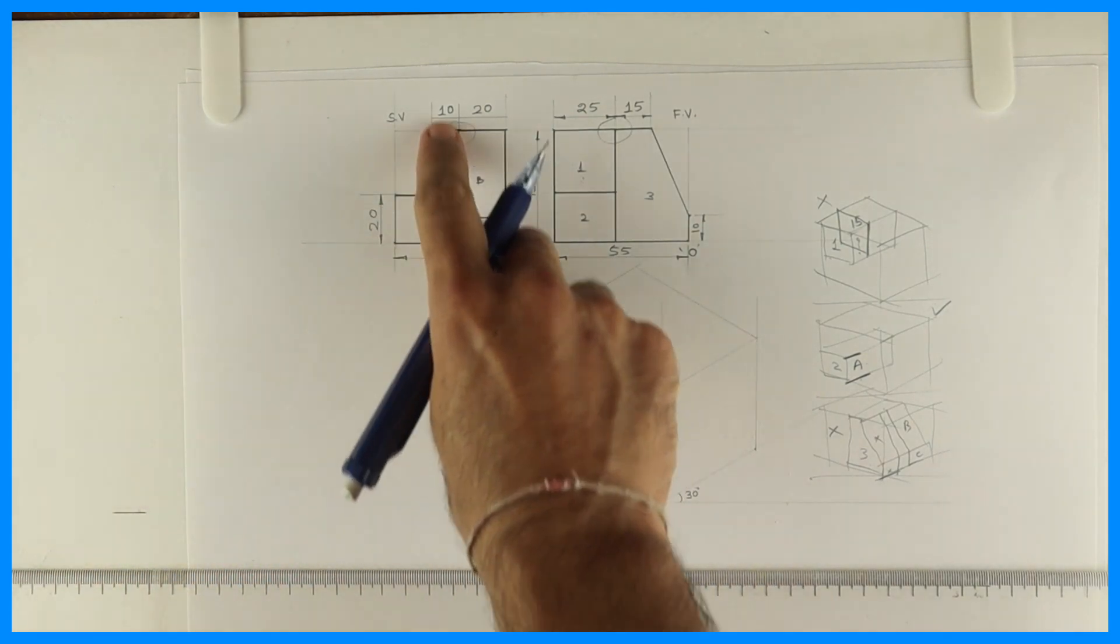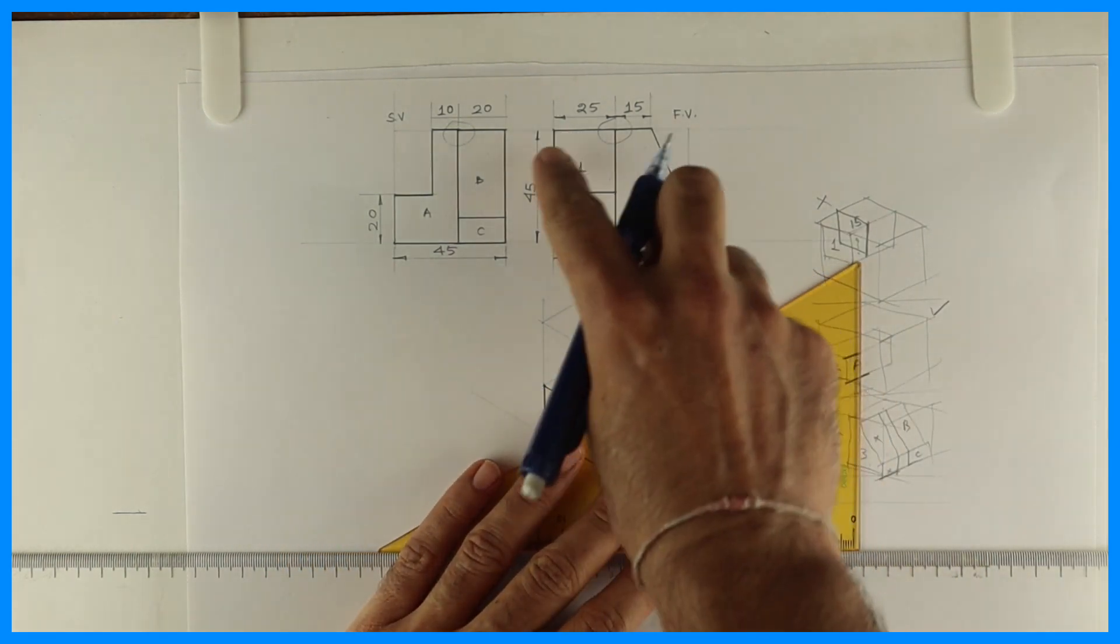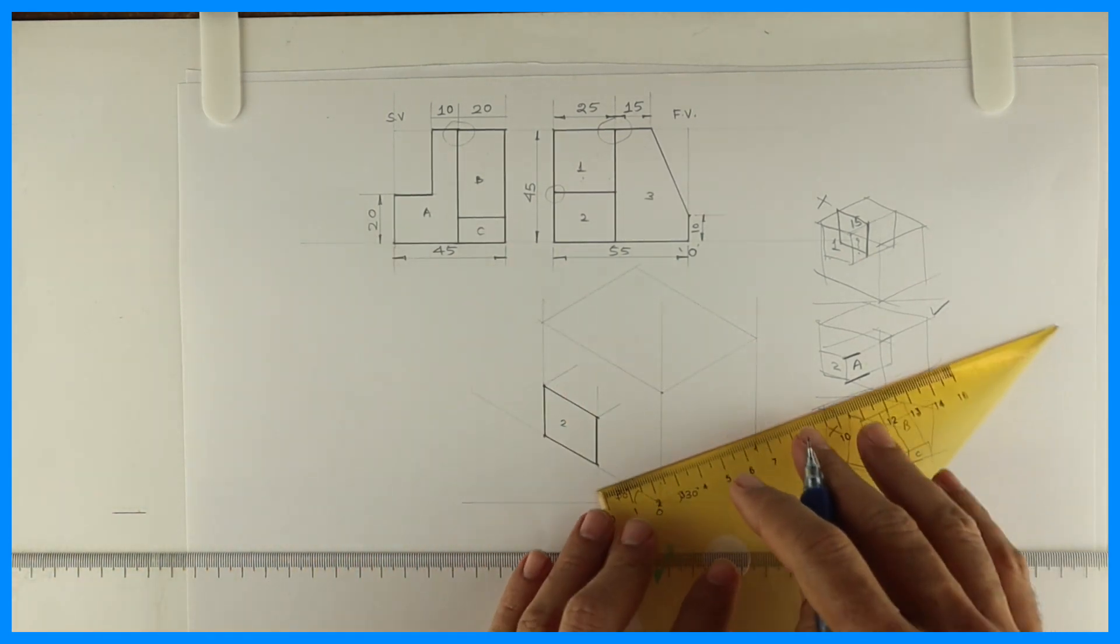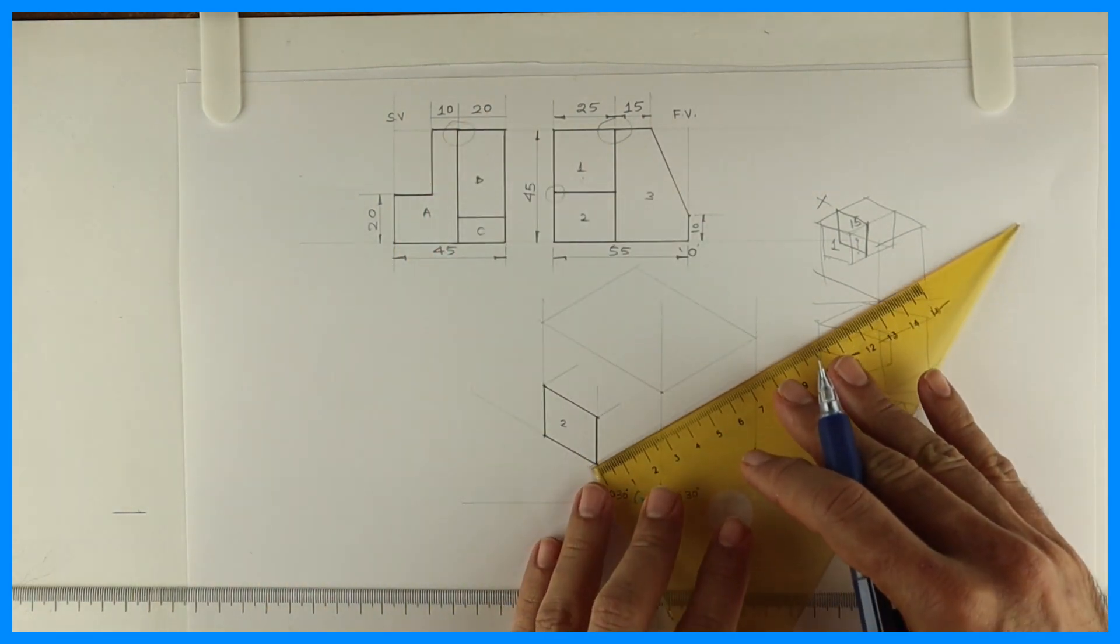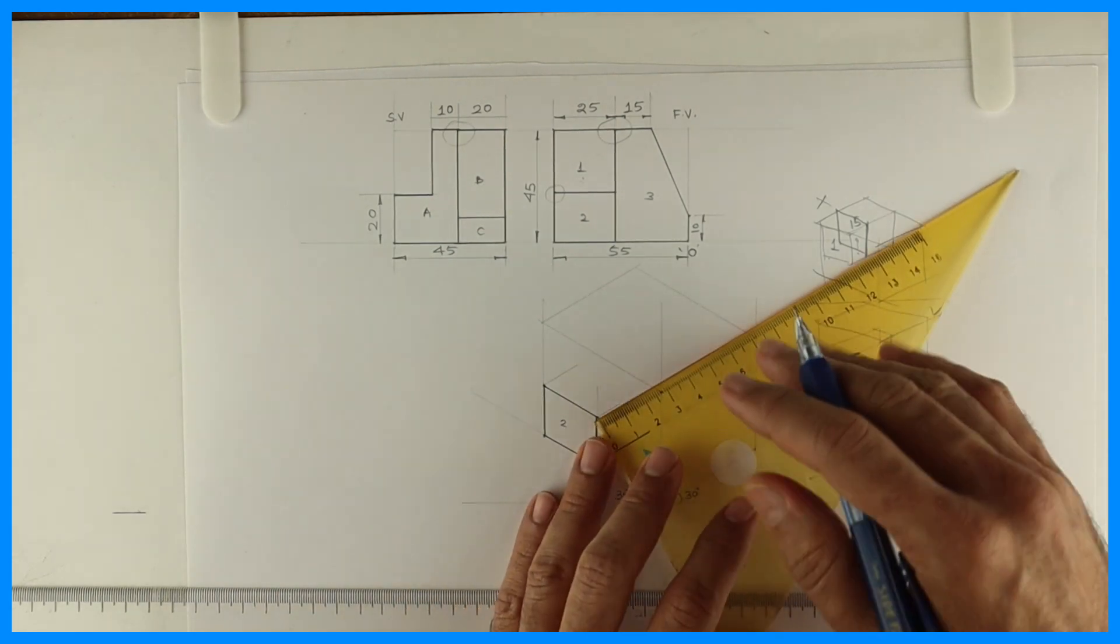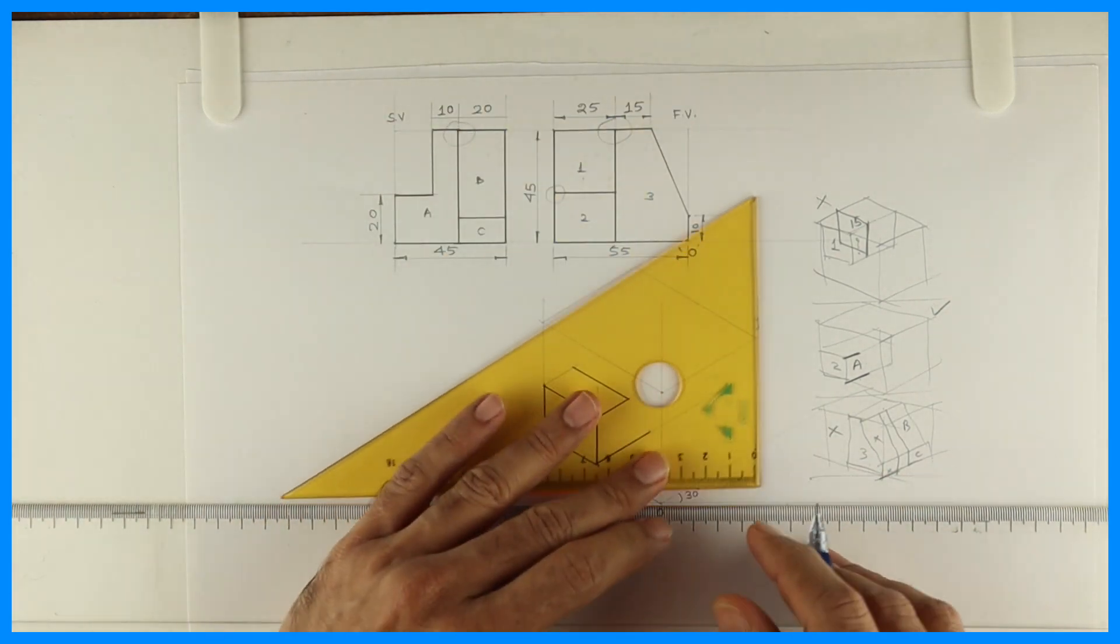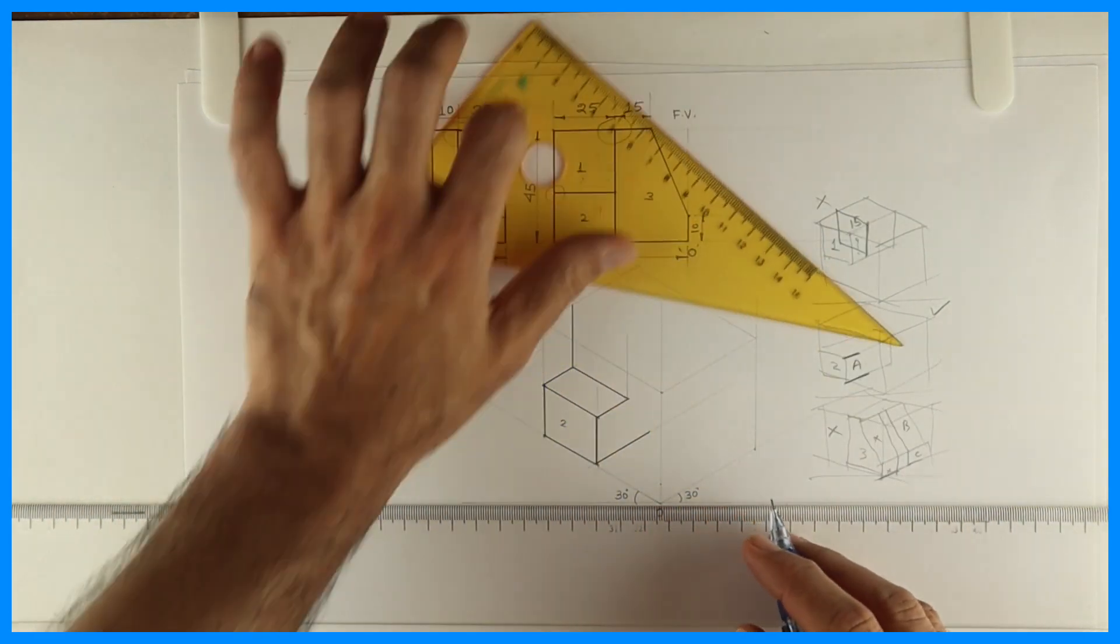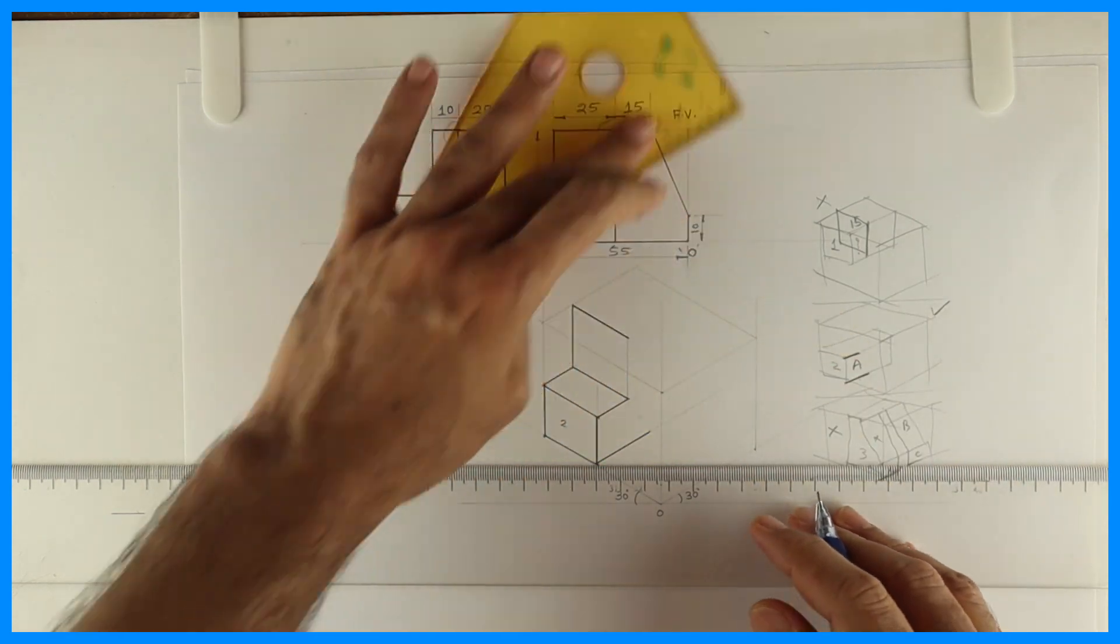Now we have to go behind by how much? 15, to draw part one. We'll go behind by 25 from down because it is 20. And this is 15. So we have to go up by 25. So we got part one. 45 minus 20, 25. So you have to go up by 25 and draw this rectangle. So you'll get part one.